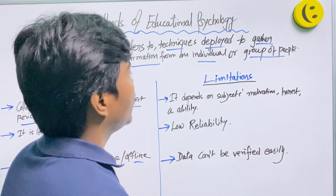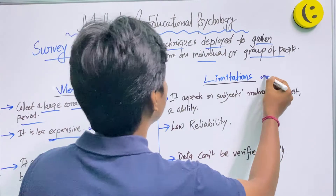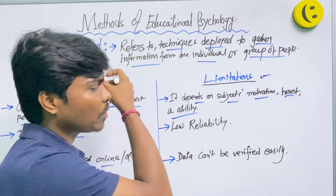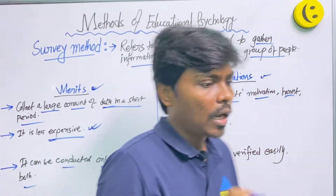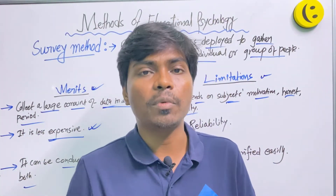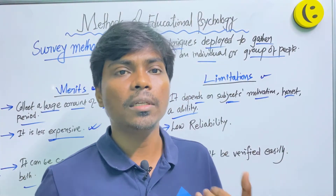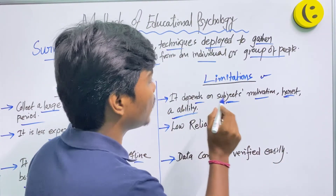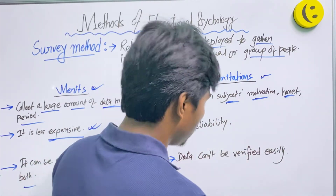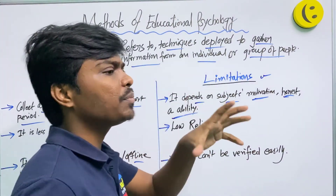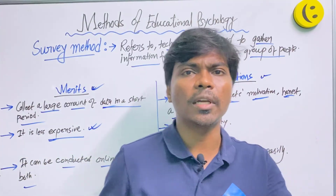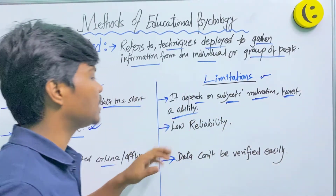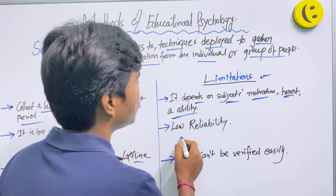Among the limitations of the survey method, the data depends on subjects' motivation, honesty, and ability to respond. The subject may not always be honest, and the data depends entirely on the subject, which can be a drawback.